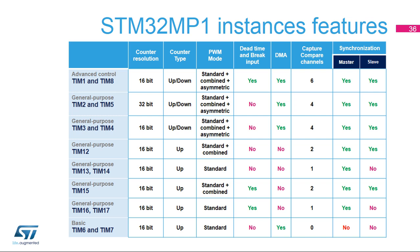Timers 15, 16, and 17 also have dead time insertion and brake input features for driving simple power systems with only a single PWM pair. Lastly, timers 6 and 7 are pure time bases with no outputs, used principally to trigger the DAC converters or to provide software time bases.